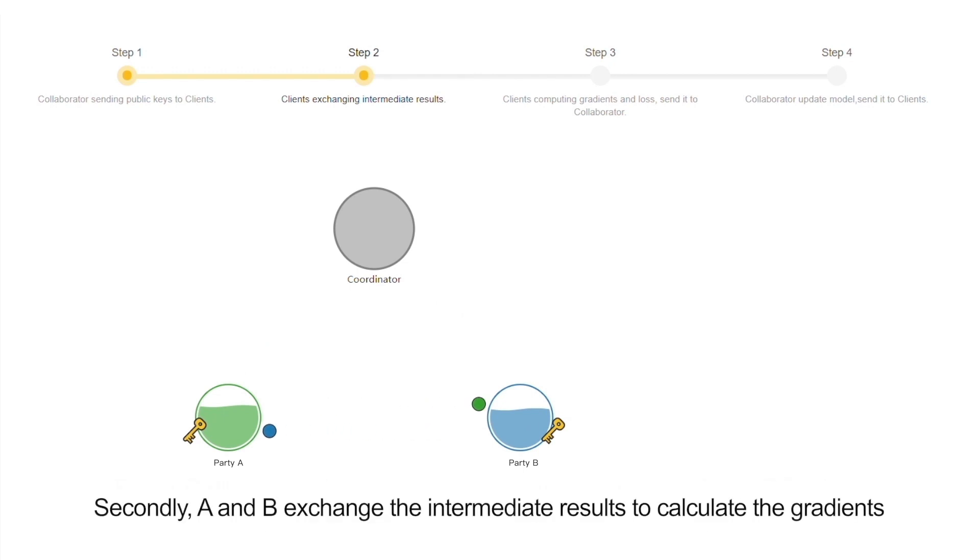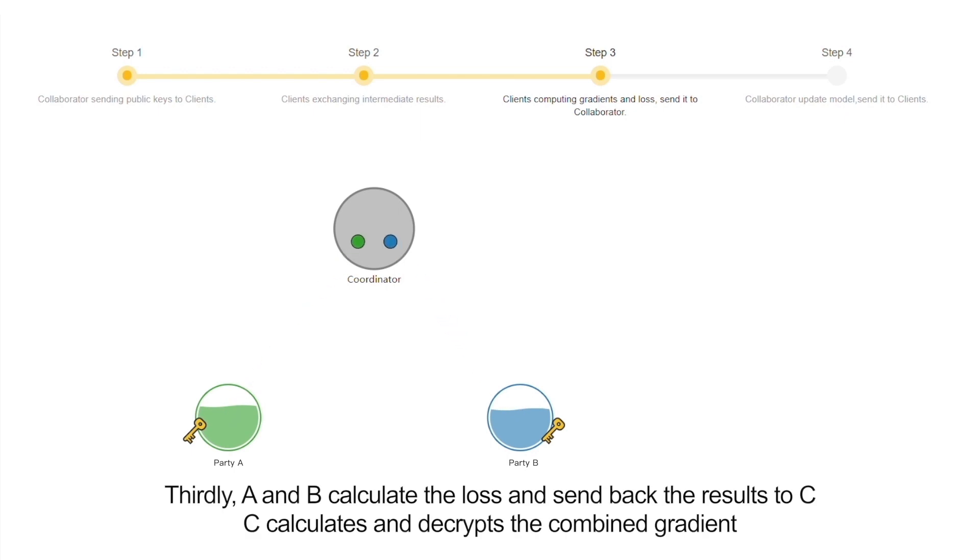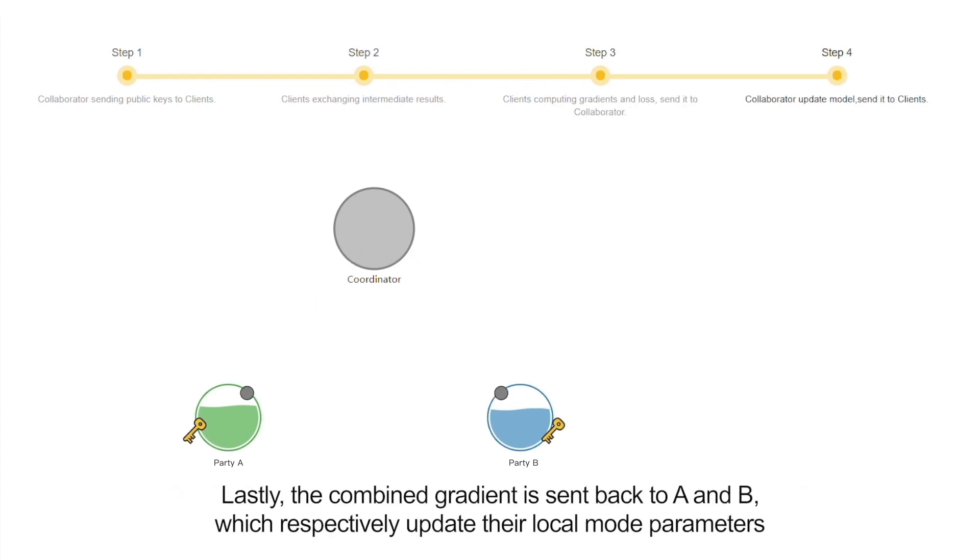Secondly, A and B exchange the intermediate results to calculate the gradient. Thirdly, A and B calculate the loss and send back the results to C. C calculates and decrypts the combined gradient. Lastly, the combined gradient is sent back to A and B, which respectively update the local model parameters.